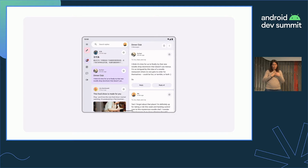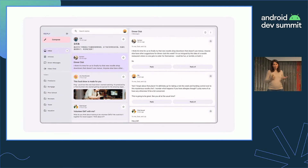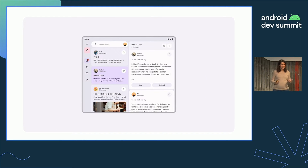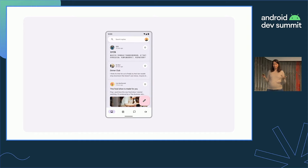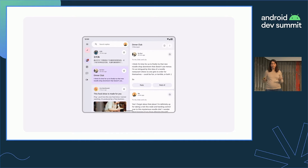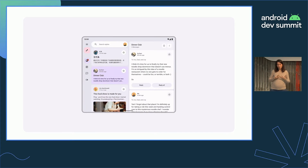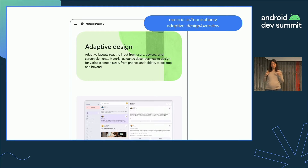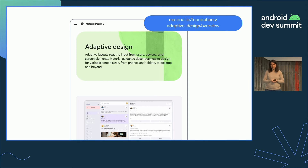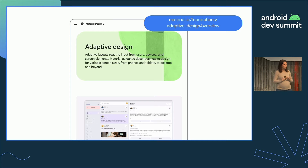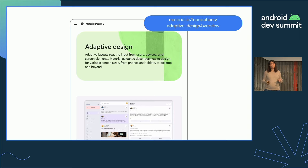We heard loud and clear from both developers and designers that you needed more guidance. There's a lot more real estate to fill when your app is running on a tablet or a desktop device, and how to fill that space is a hard question. So we've been working really hard on giving you a lot of guidance. The Material Design website now has a bunch of new information around adaptive design and what you can think about to really use that space smartly, not just blow up your app.